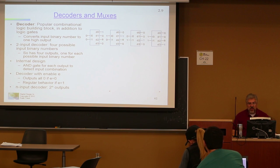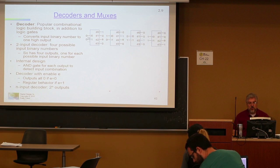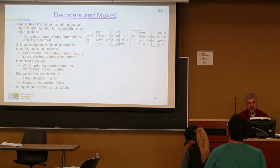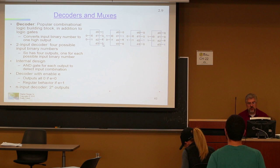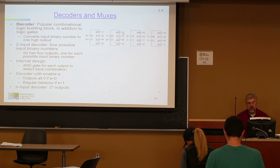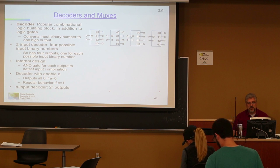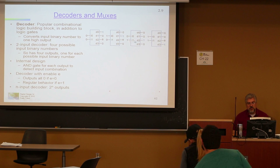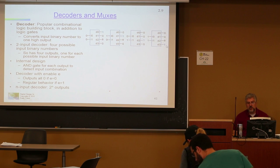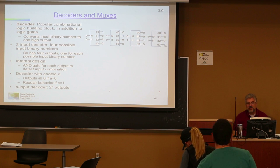Here's the neat thing — all you have to do is identify the decoder. When the input is 00, this output right here is 1000. When this is 10, the output is 0100. When this is 01, the output is 0010. And when this is 11 — notice that only one of these outputs is 1 at any time.